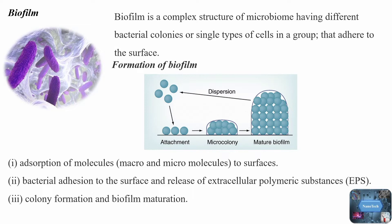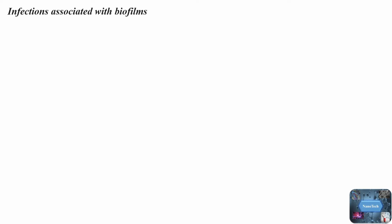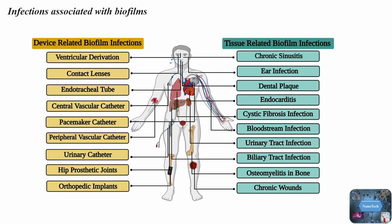Infections associated with biofilms: in the human body, bacterial biofilm is the cause of over 80% of chronic and recurrent microbial illnesses. Antibiotic resistance in biofilm-containing microbial cells is 10 to 1,000 times higher than in planktonic cells. Infections associated with biofilms can be roughly categorized into two categories: biofilms that may grow on abiotic surfaces, particularly infections related to invasive medical devices, and native biofilm infections of host tissue. Biofilm that first develops on medical implants such as heart valves, catheters, contact lenses, joint prostheses, intrauterine devices, and dental units can result in infections of the urinary tract and bloodstream. The only way to treat these infections is to remove the implants, which raises the expense of treatment and creates difficulties for patients.